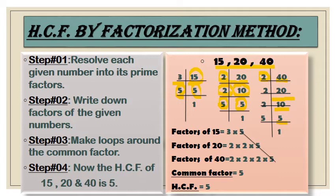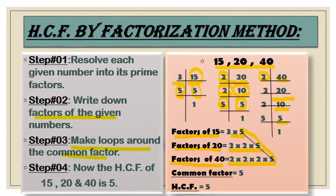The second step is to write down the factors of the given numbers. Factors of 15 = 3 × 5. Factors of 20 = 2 × 2 × 5. Factors of 40 = 2 × 2 × 2 × 5. In the next step, make loops around the common factor. We have 5 as a common factor, so the HCF of 15, 20, and 40 is 5.